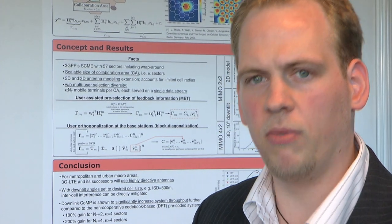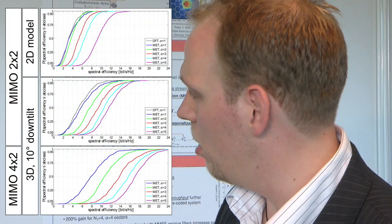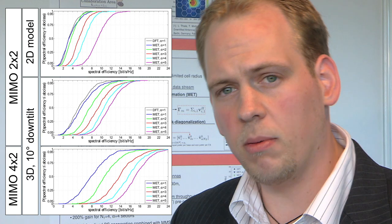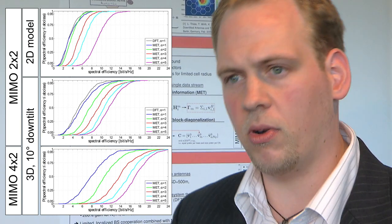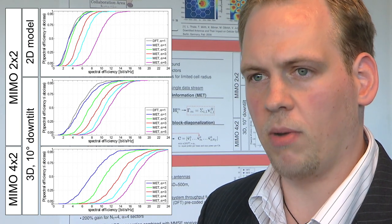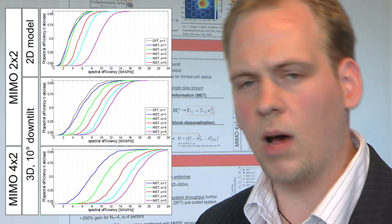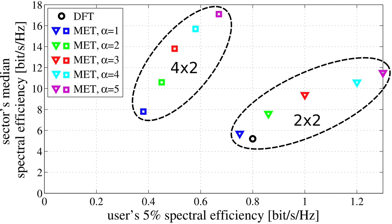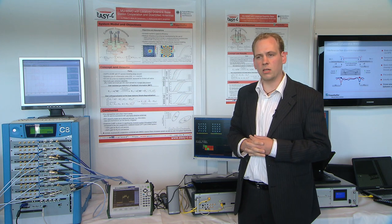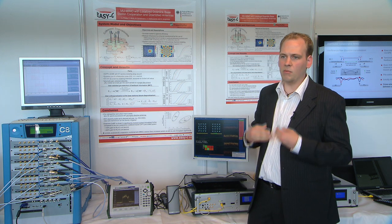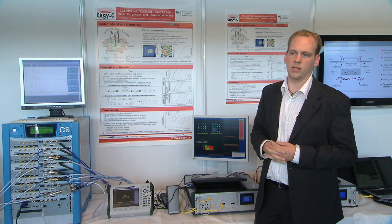By this combination of really powerful techniques, we can show the achievable performance scales with the number of collaborating sectors, ranging from 100% to 200% compared to the non-collaborative case. Concluding, limited localized base station cooperation is in fact feasible and brings gains in a cellular system.